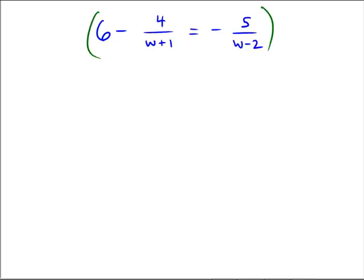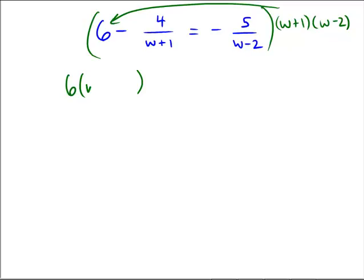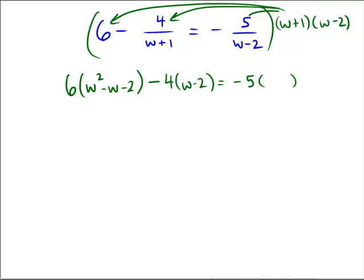If you didn't stop the video and want to see another example, that's totally reasonable too — that last one was not very pretty. We multiply in this case by w plus 1 times w minus 2. Over on the far left we get 6 multiplied by the product of those two binomials, which is w squared minus w minus 2. Then subtracting: in the next term the w plus 1's cancel, giving us 4 times w minus 2. On the right, the w minus 2's cancel, leaving negative 5 times w plus 1.